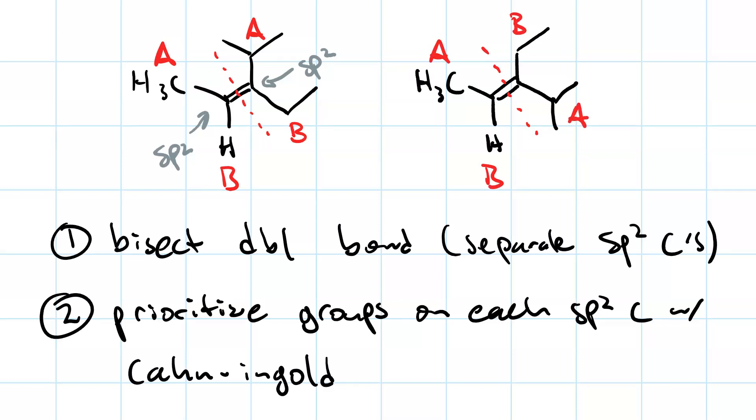And now, you just see where the A's are pointing, that is, where the higher priority groups are pointing. For the molecule on the left, both high priority groups are pointing up. That means they're together, or zusammen in German.